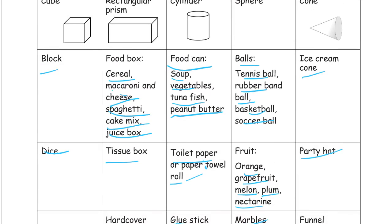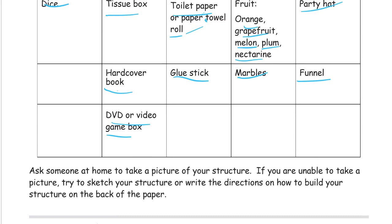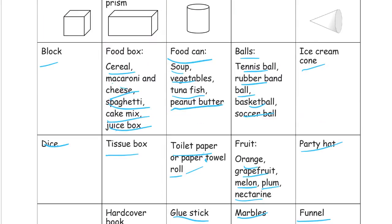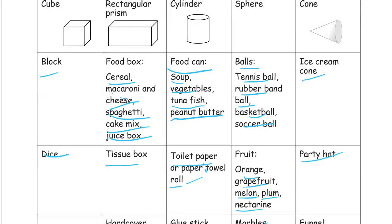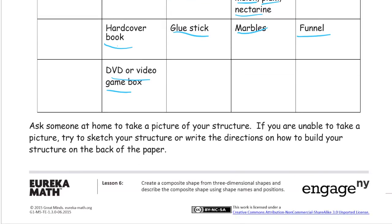All right, so what you do is just get a few of these things and build something out of them — put them together to make some kind of structure. If there's somebody around who has a phone, have them take a picture of it. If you don't have that, then try to draw a picture of it, or write directions on how to build your structure on the back of this page.